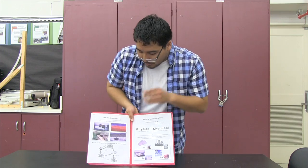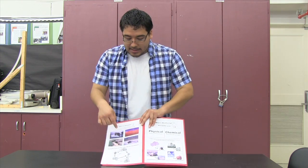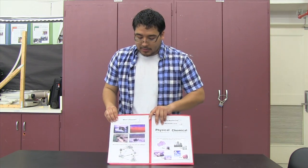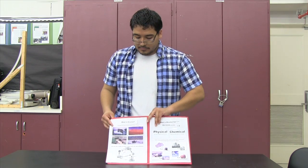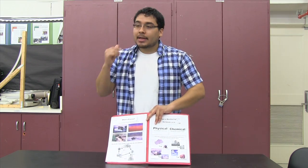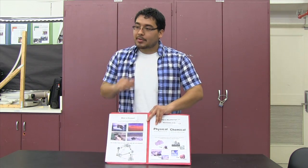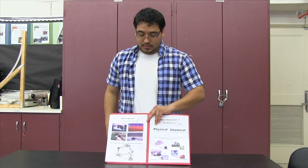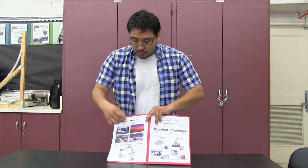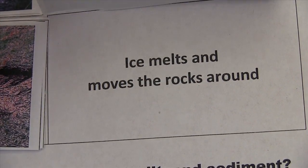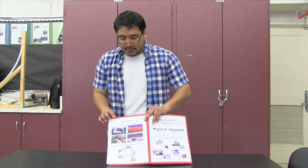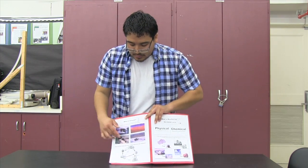Now this last one, there's a whole bunch of ice. What would happen if the ice melts? It's going to turn to water. And then if it breaks a whole bunch of the rocks, what's going to happen to those rocks once the ice melts? It's going to move the rock — the particles that broke down. So ice melts and moves the rocks around. So all these are different kinds of erosion.